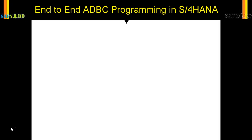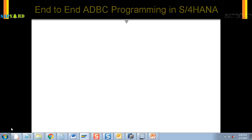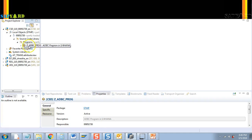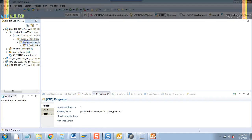In this example, we will take a practical case. We will build a selection screen. We will input a material, and then we will try to get the material number, material type, and a text. We will show them in an ALV. So let's start — let us go to our HANA studio and create our second ADBC program.